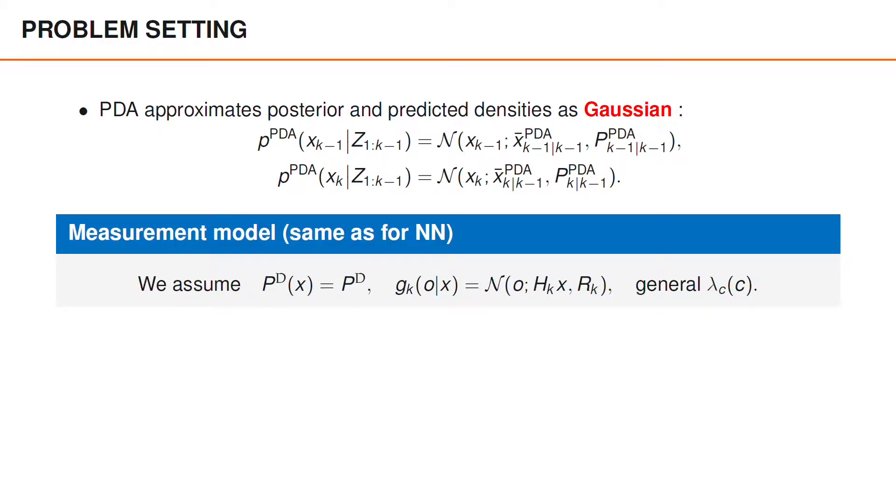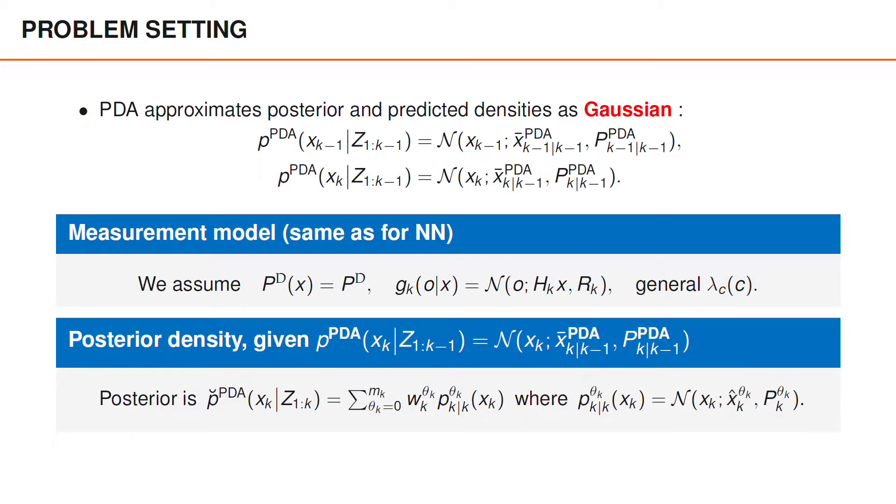We will again assume that we have a constant PD and a linear and Gaussian object likelihood gk, whereas we can handle general intensity functions. Under the assumption that the predicted density is this Gaussian density given by the PDA prediction, the posterior after the update, denoted p-breve,